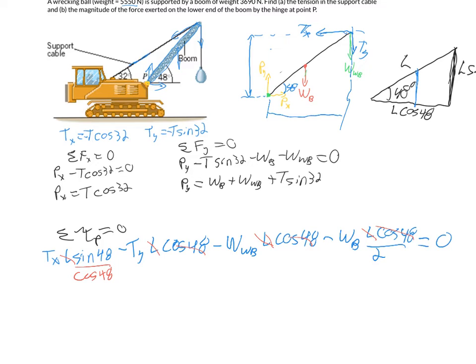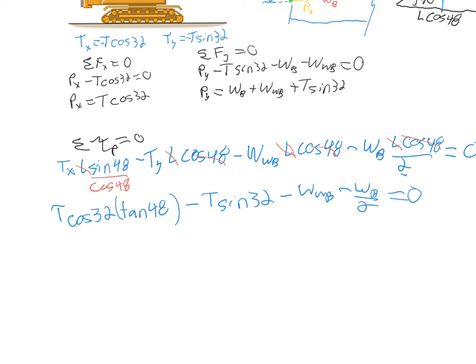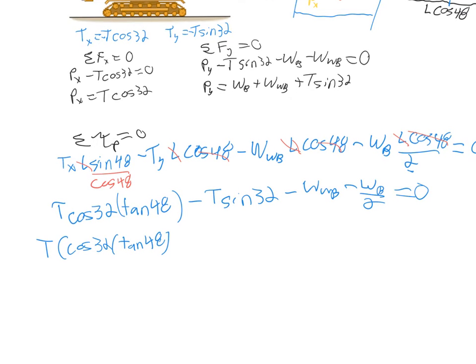All right. So now I'm going to rewrite my equation after making those simplifications. Tx is T cosine 32. And then sine of 48 over cosine of 48 is tangent of 48. All right. Minus Ty is T sine 32 minus the weight of the wrecking ball and minus the weight of the boom over 2 equals zero. Don't forget this one half here. Now, T is our only unknown in this equation. So we can go ahead and solve for T. So if I factor out T on this side, I'm going to have T times the cosine of 32 multiplied by the tangent of 48 minus sine of 32 because we've factored out the T from both terms. And that equals moving the things to the other side, the weight of the wrecking ball plus the weight of the boom over 2.